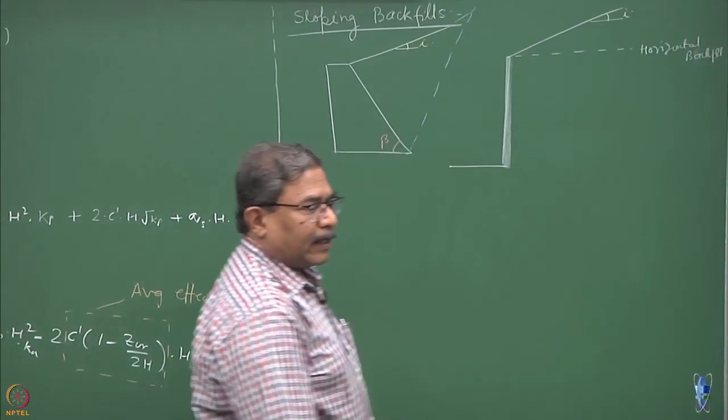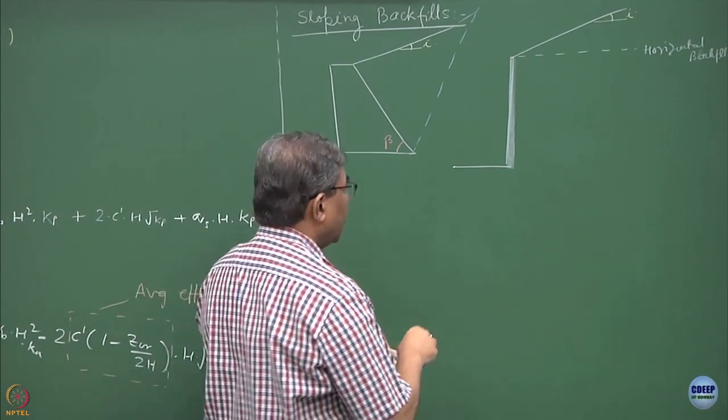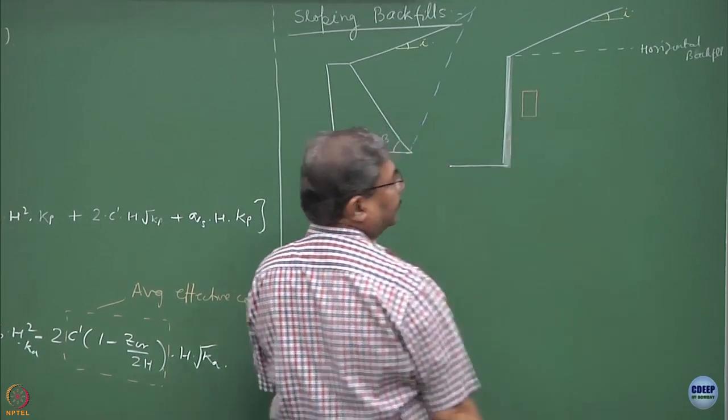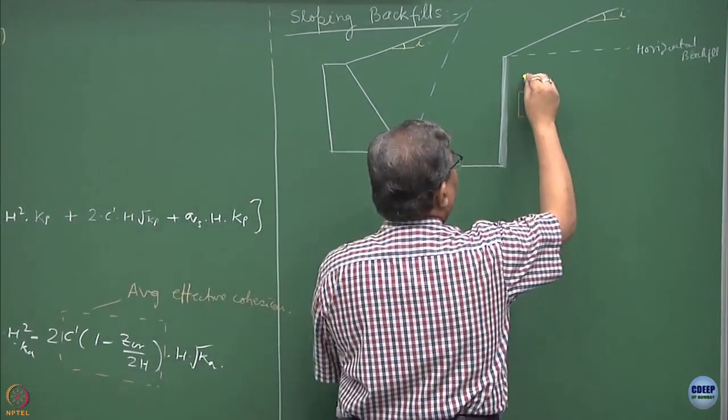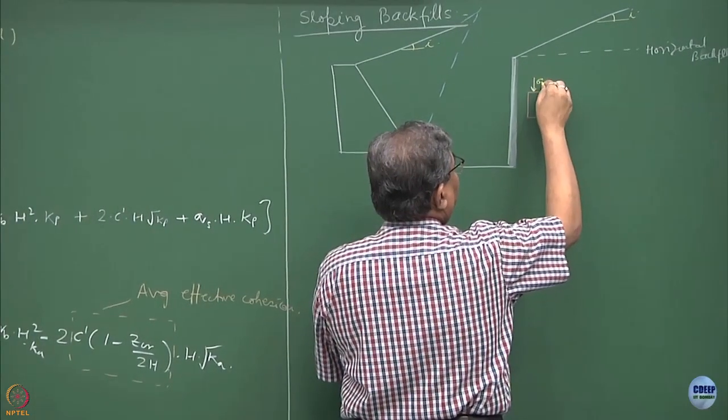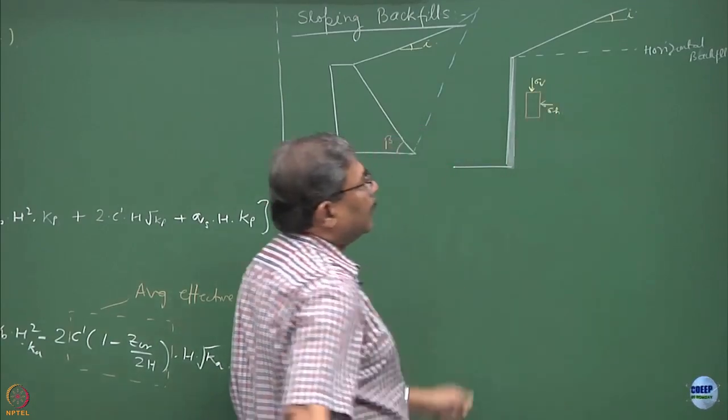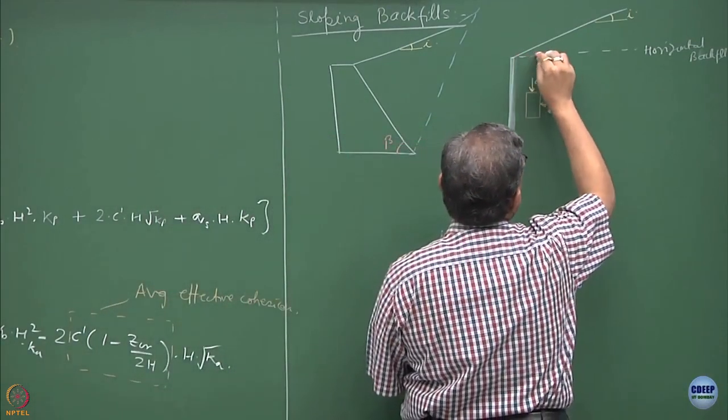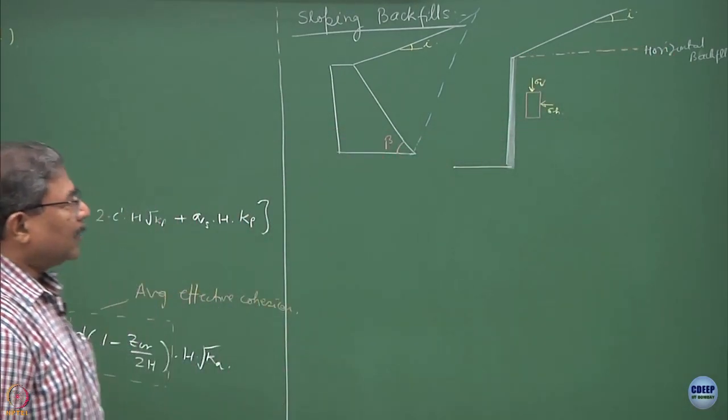If I would have taken an element of the soil mass very close to the wall, this is how it would have looked like, a triaxial element. We would have been having sigma v, sigma h due to the condition when the backfill is horizontal, but now what has happened?